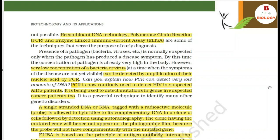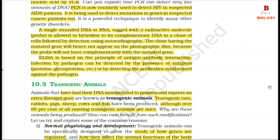PCR is now routinely used to detect HIV in suspected AIDS patients. It is also being used to detect mutations in genes in suspected cancer patients and is a powerful technique to identify many other genetic disorders. A single-stranded DNA or RNA tagged with a radioactive molecule, called a probe, is allowed to hybridize to its complementary DNA in a clone of cells, followed by detection using autoradiography. The clone having the mutated gene will not appear on the photographic field because the probe will not have complementarity with the mutated gene. ELISA is based on the principle of antigen-antibody interaction; infection by a pathogen can be detected by the presence of antigens or by detecting antibodies synthesized against the pathogen.